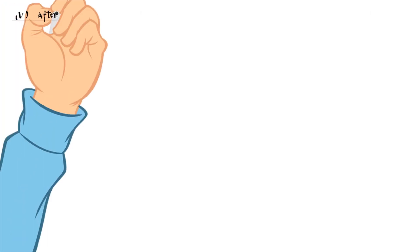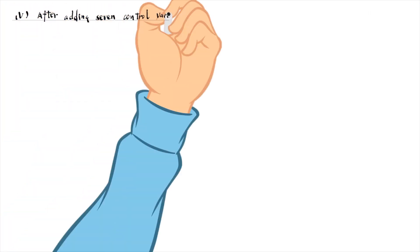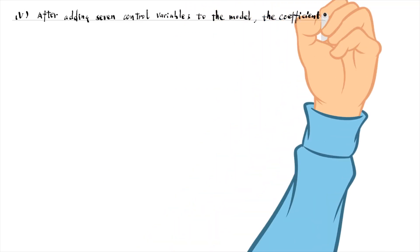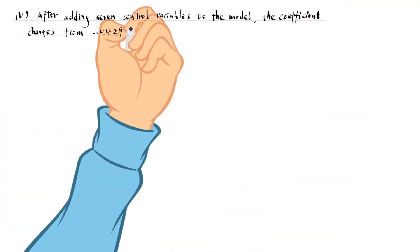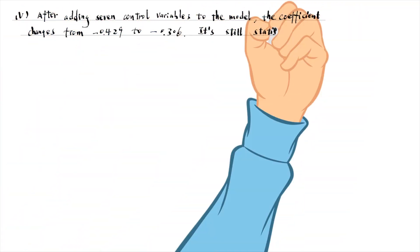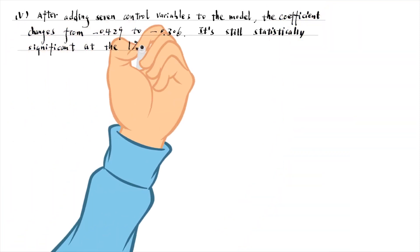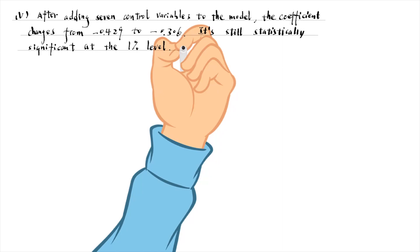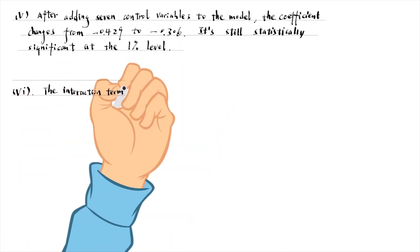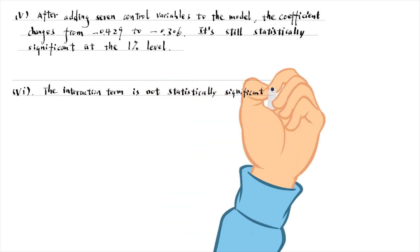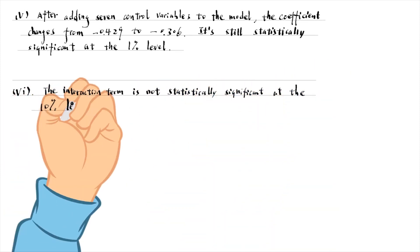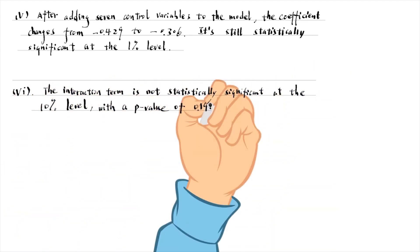In part 5, we add 7 control variables to the model and the coefficient changes from minus 0.429 to minus 0.306. It is still statistically significant at the 1% level. In part 6, the interaction term between electricity and education is not statistically significant at the 10% level, with a p-value of 0.190.